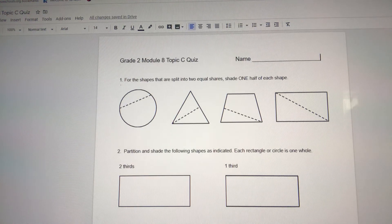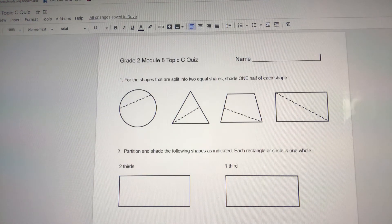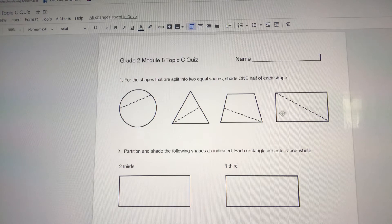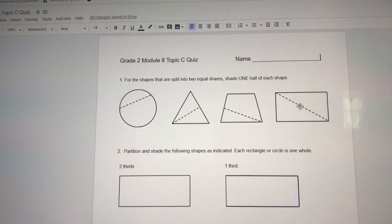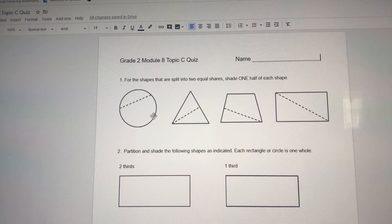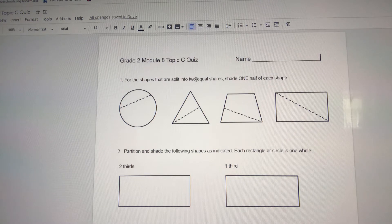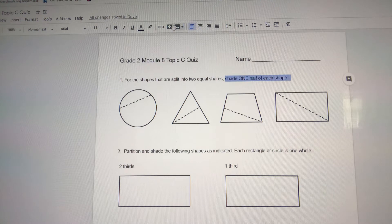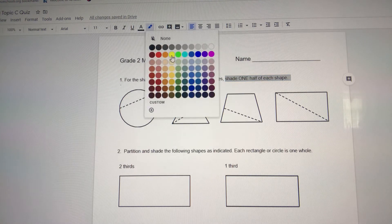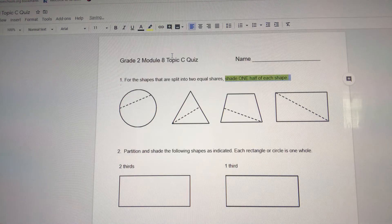Hi boys and girls, I think there was an error on the zoom page and that is why I lost you, but I'm going to give you the instructions very quickly. For question one, they are showing you four shapes. Some of these shapes have equal shares, not all of them do. For the ones that have equal shares, they want you to shade one half of the shape.